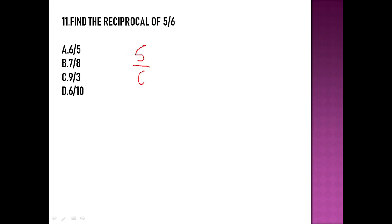The next question asks to find the reciprocal of 5/6. In 5/6, the numerator is 5 and the denominator is 6. To find the reciprocal, we simply exchange the places of the numerator and denominator. So the numerator 5 becomes the denominator, and the denominator 6 becomes the numerator. The reciprocal of 5/6 is 6/5, and that is the right answer.